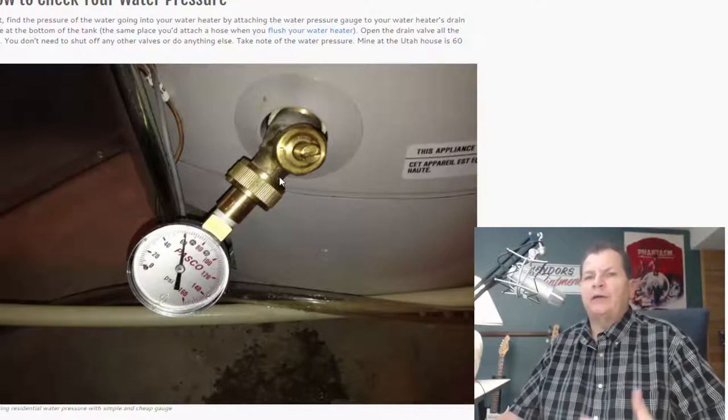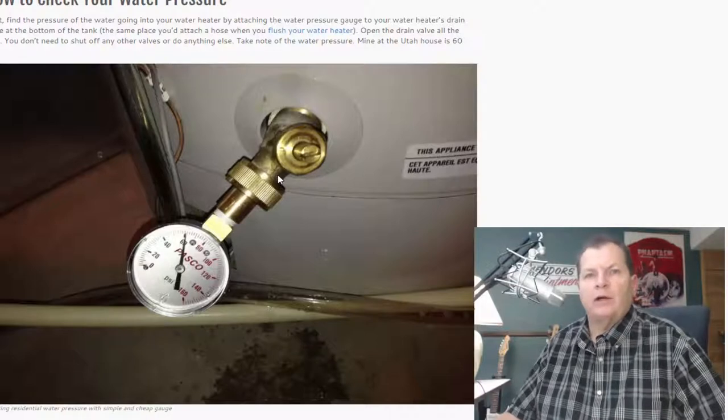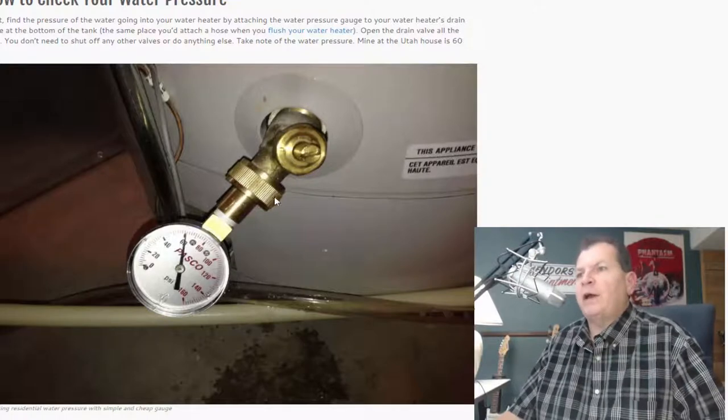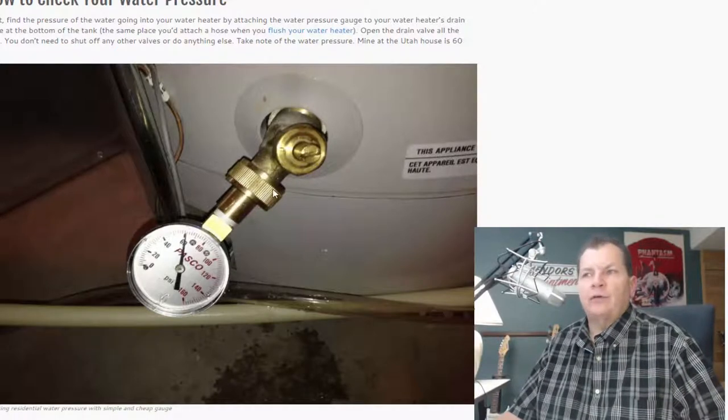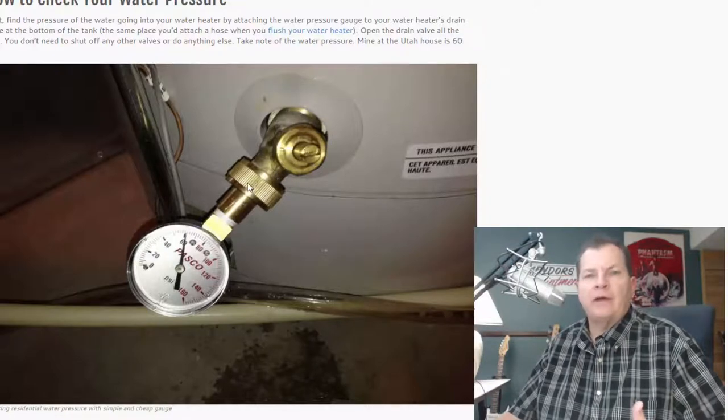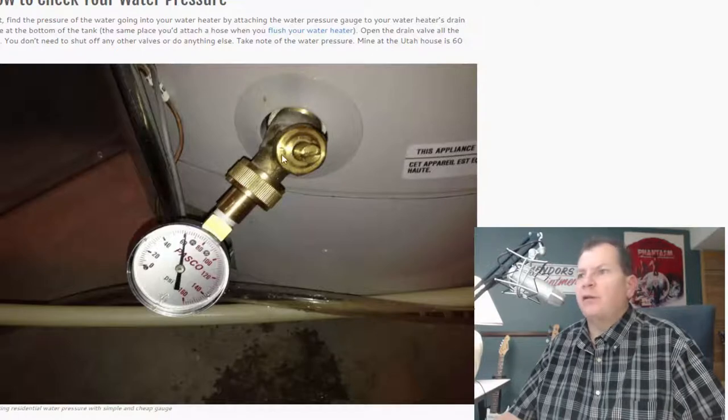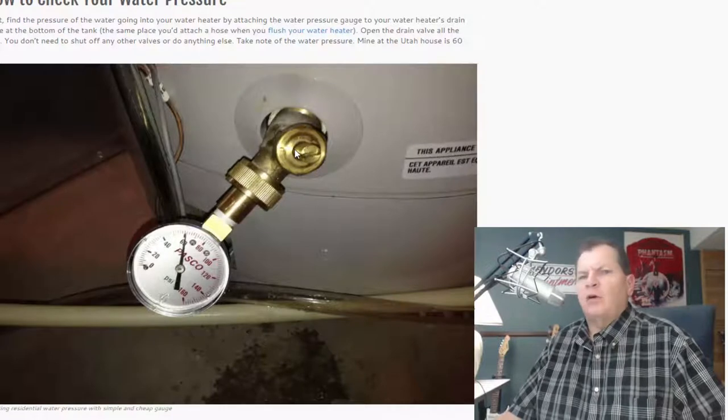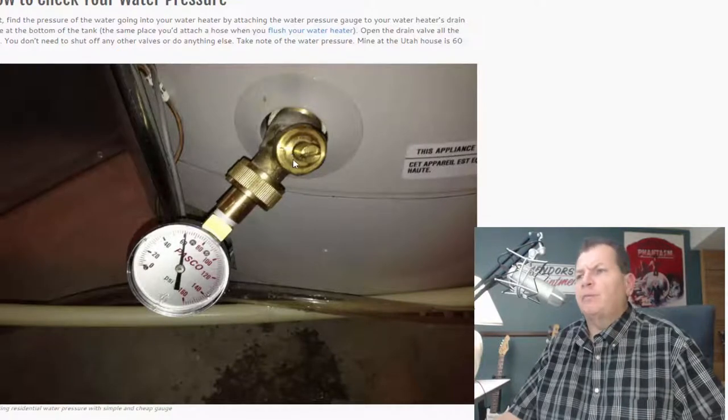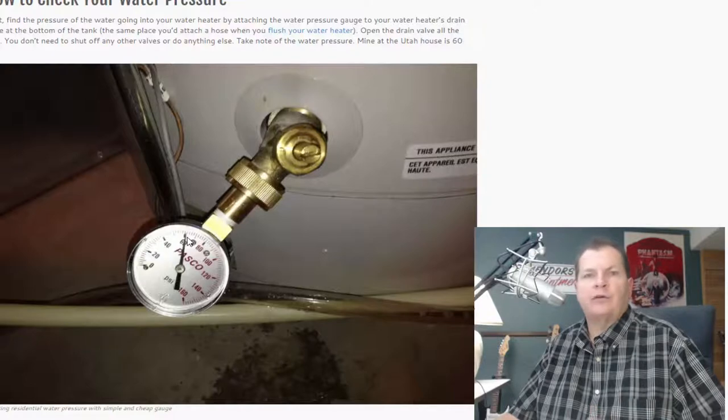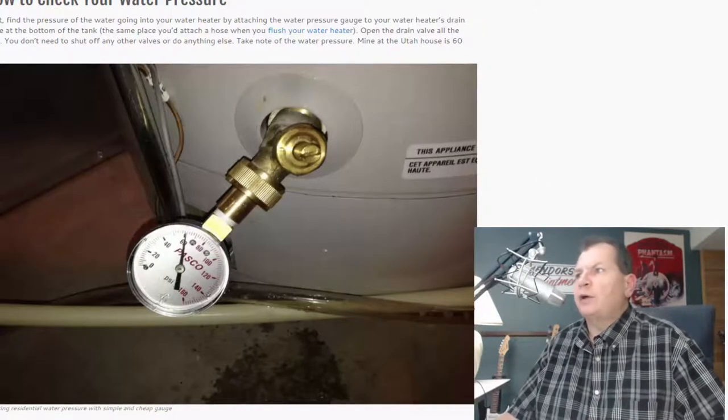Maintenance. That would be a different video. But yes, you're actually supposed to drain the water heater from time to time to get some of that crap out of there. Anyway, so you screw the gauge onto this drain valve. It's a garden hose thread to match the threads on the drain valve. Hose bib is what I would probably call it. Screw that on. Open up the valve. And then you'll see the pressure. That is the pressure for your system. There you know exactly what your pressure is.